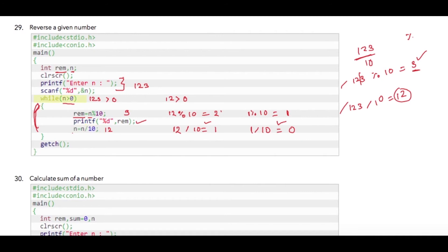When the compiler goes back to check the condition, we have 0 greater than 0, which is a false condition. By this time our output screen shows 3, 2, 1 — which is the reverse order of our original number 123. As the condition becomes false, control comes out of the loop and the program terminates.